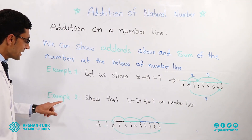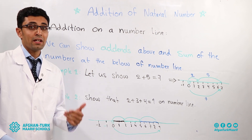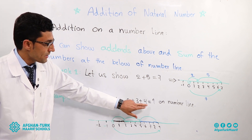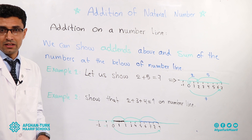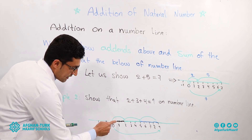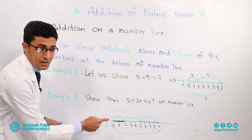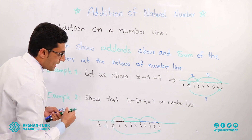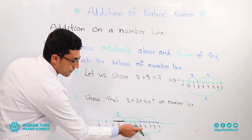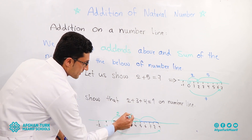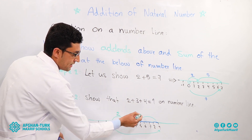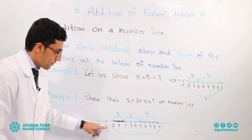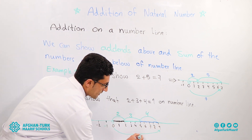Now let's look at example two to further understand addition on the number line: show that two plus three plus four equals nine. From zero to two we have two numbers. From two to five we have three numbers. From five to nine we have four numbers. Two, three, and four are the addends, and the total sum is nine.